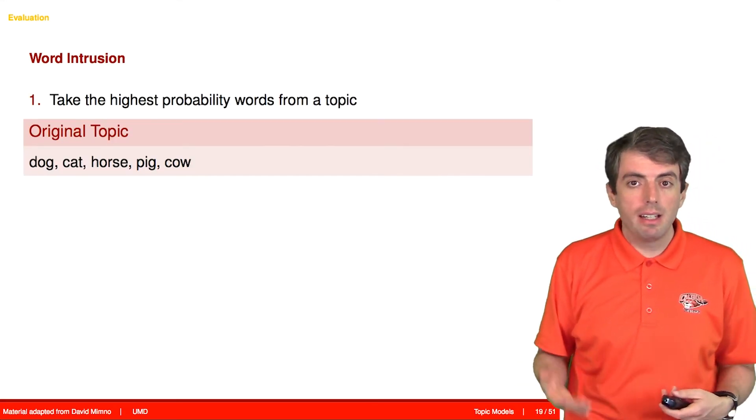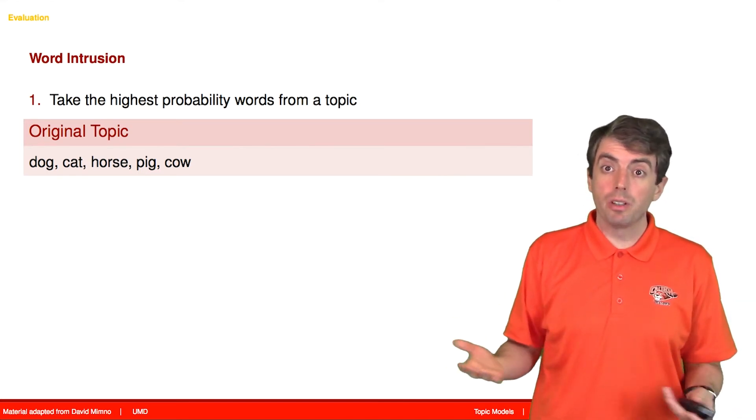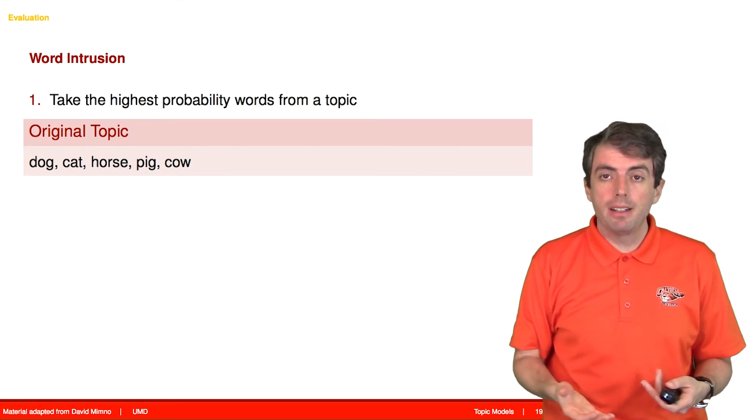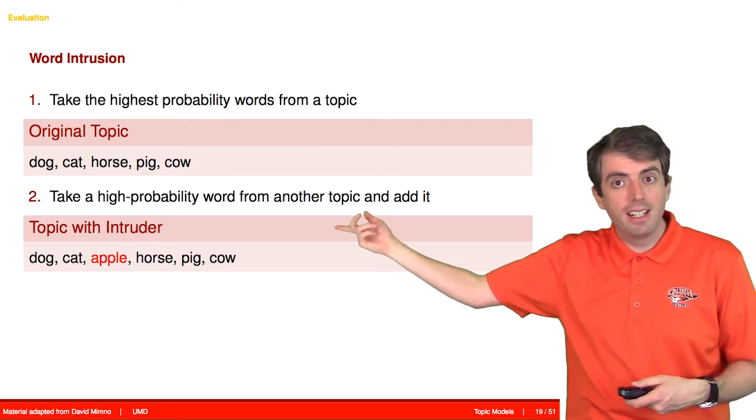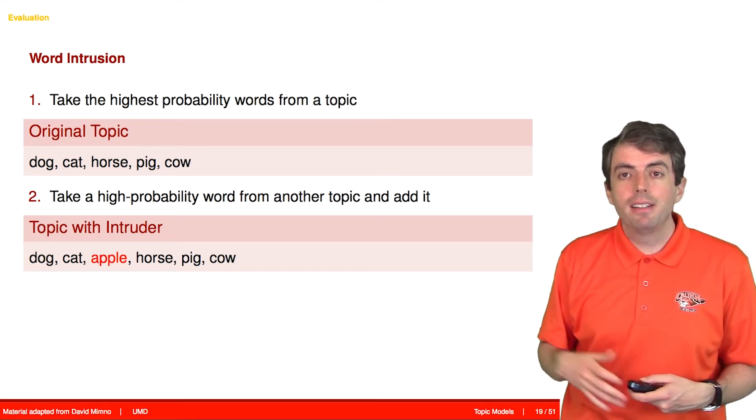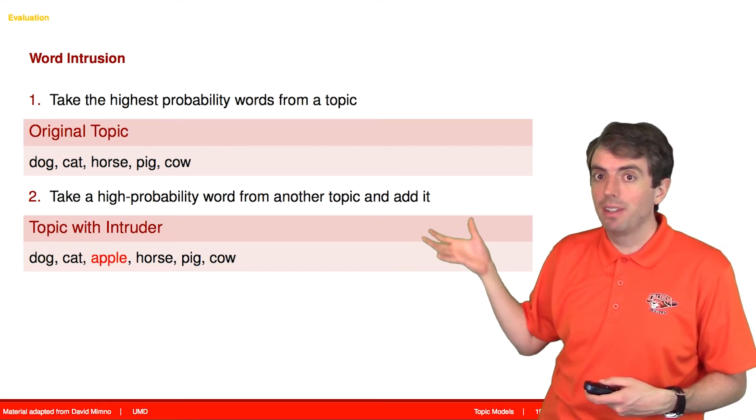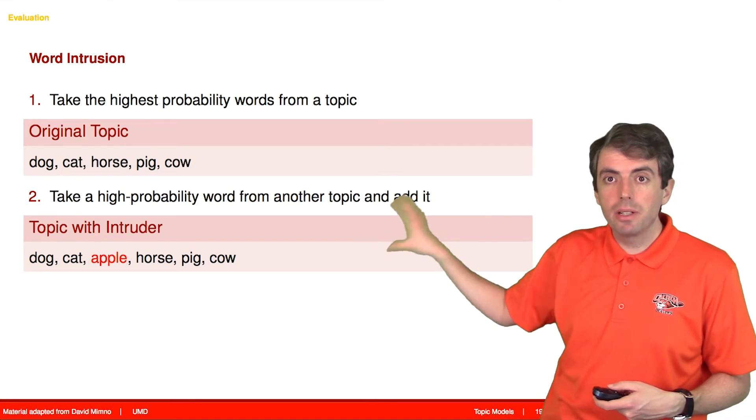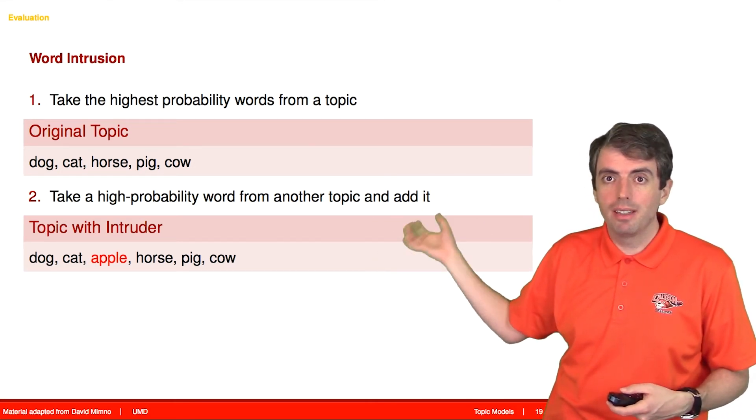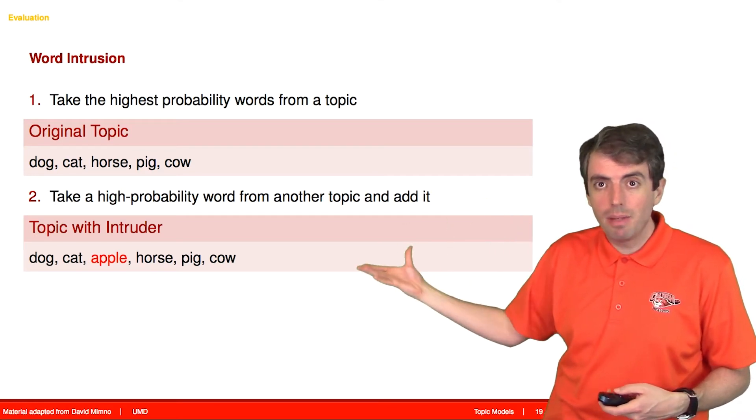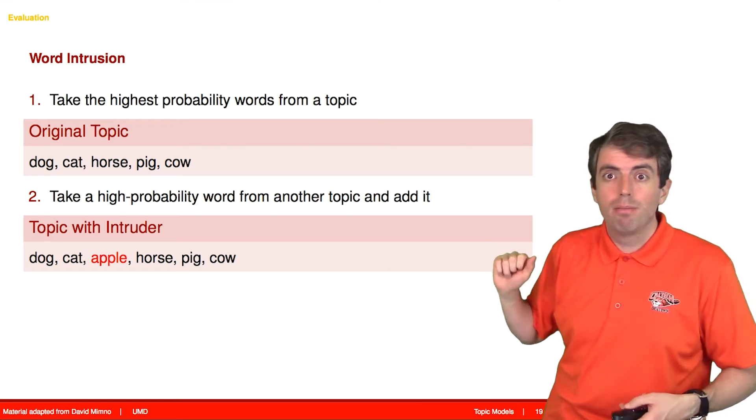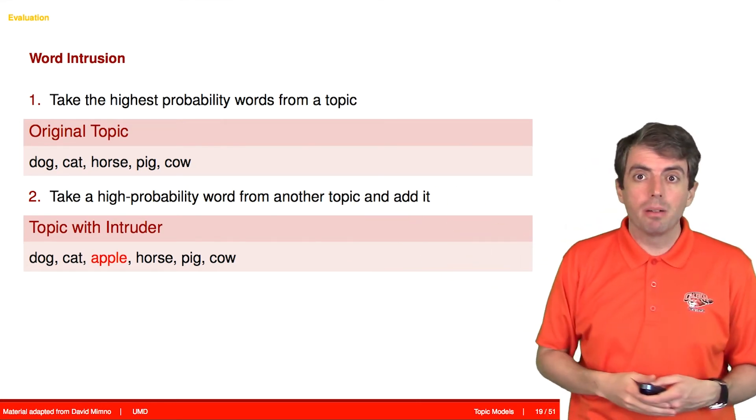So one way of doing that is you can do what's called a word intrusion test, where you take some topic, and then you find another word, and you stick it in there. And you then ask if people can find the word that doesn't belong. And if people can find the word that doesn't belong, then the original topic made sense. If they can't find the word that doesn't belong, then the original topic didn't make sense because this random word that you stuck in that doesn't belong in this topic looks as good as the words that were there before.